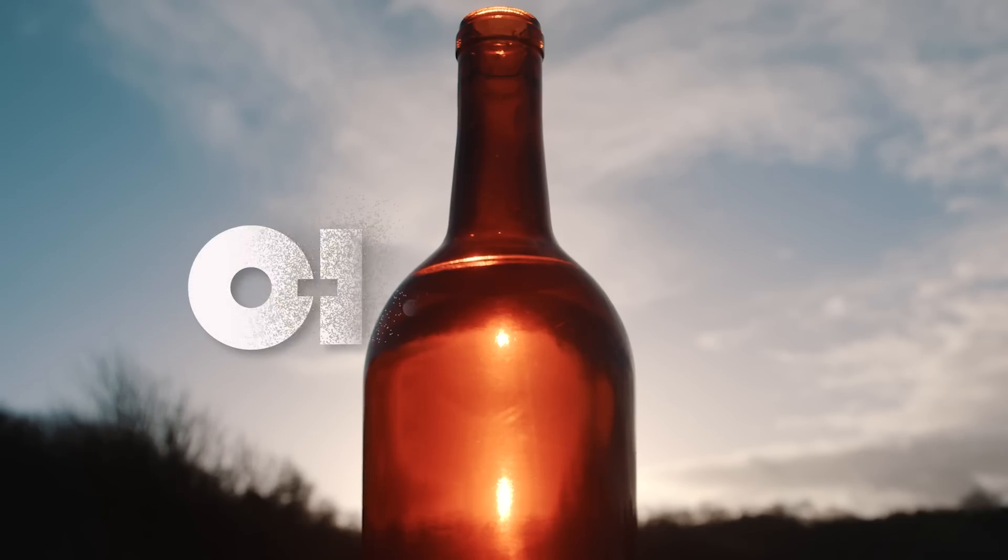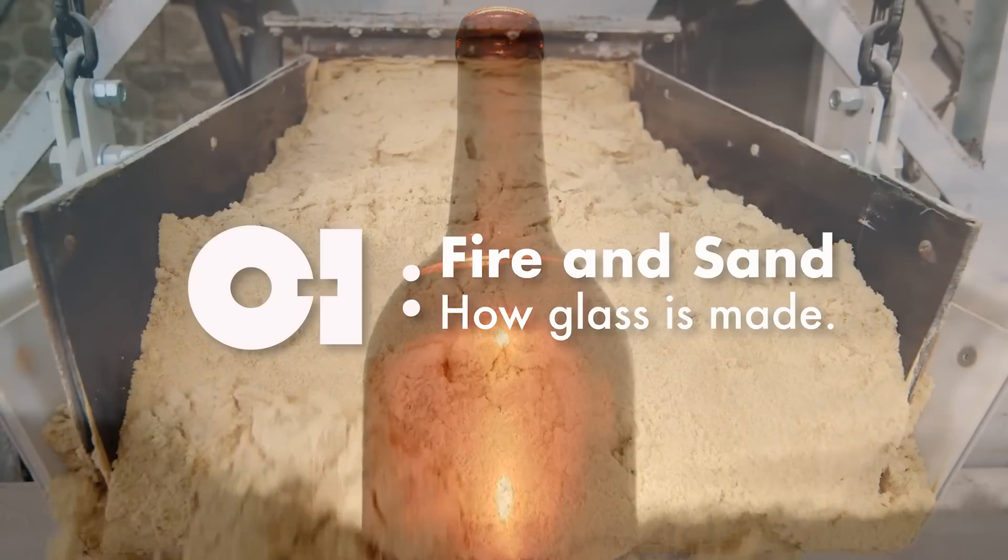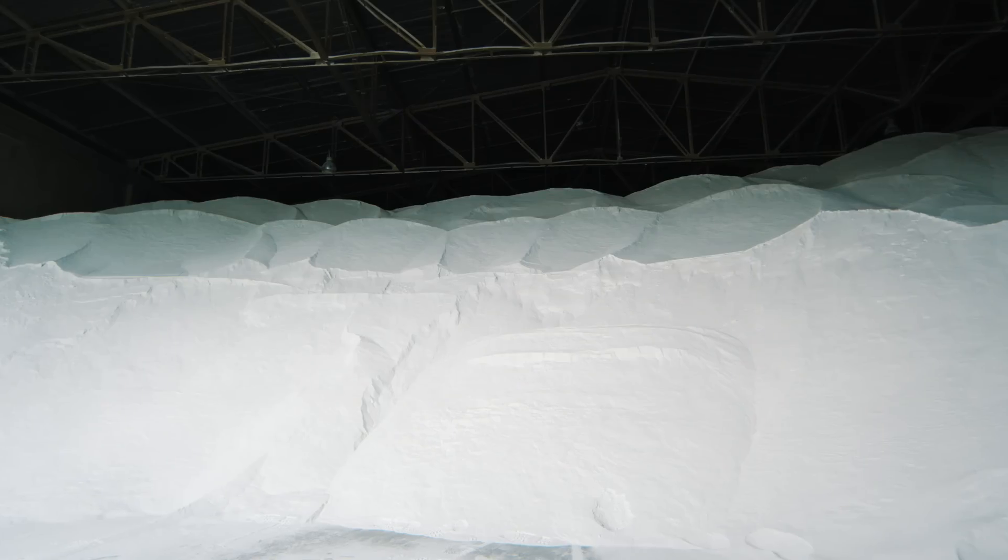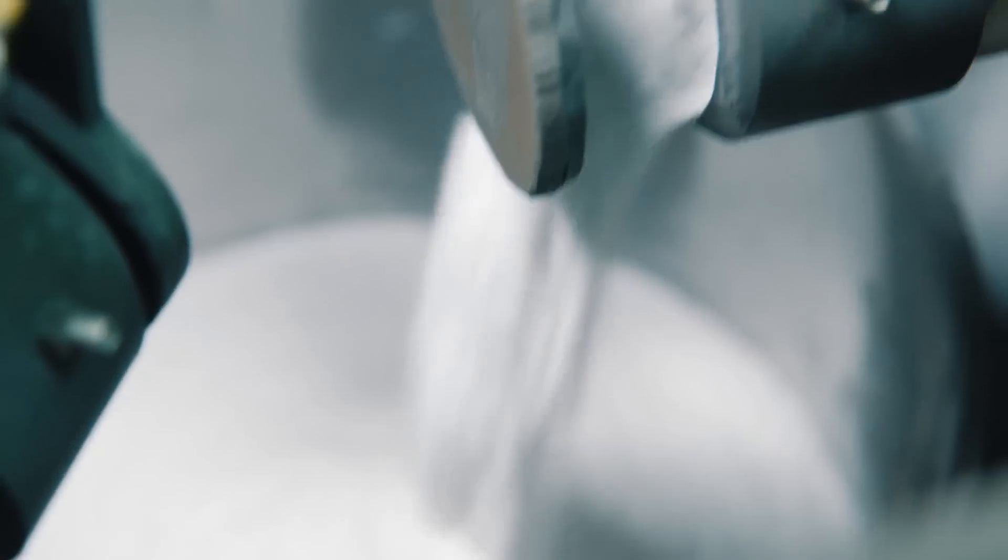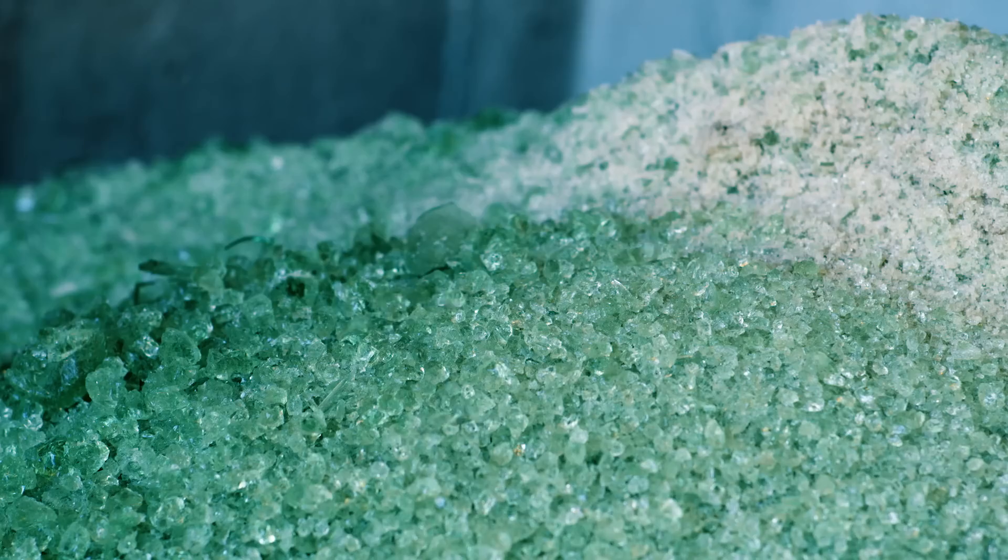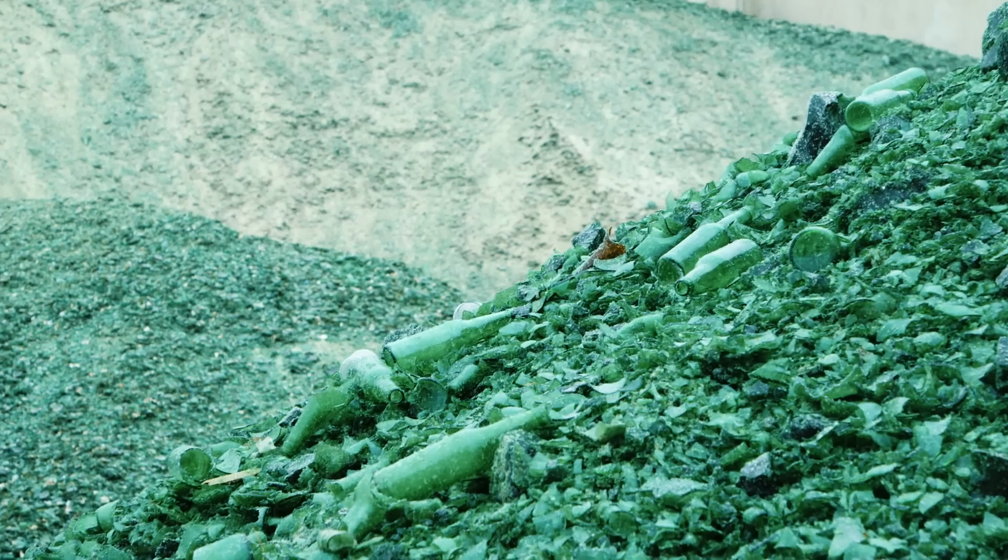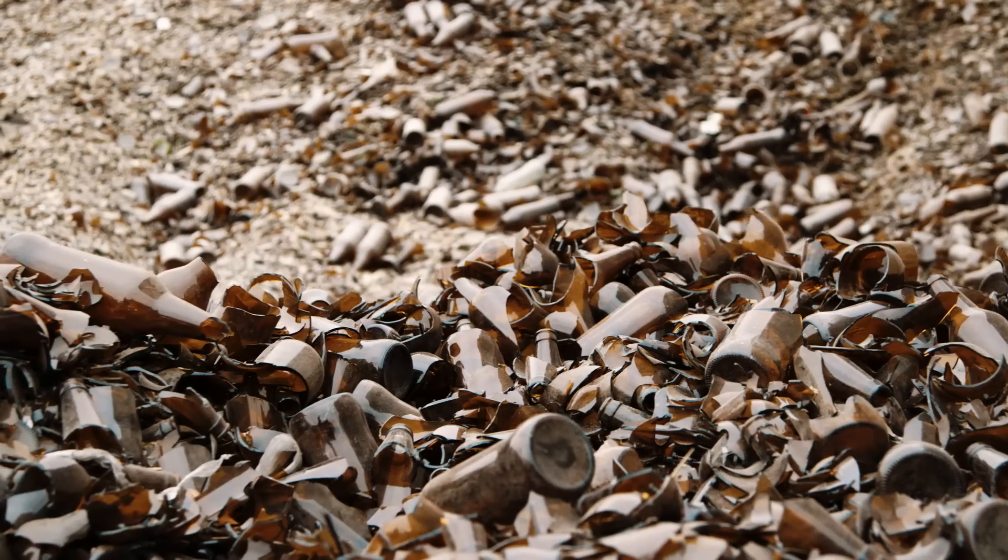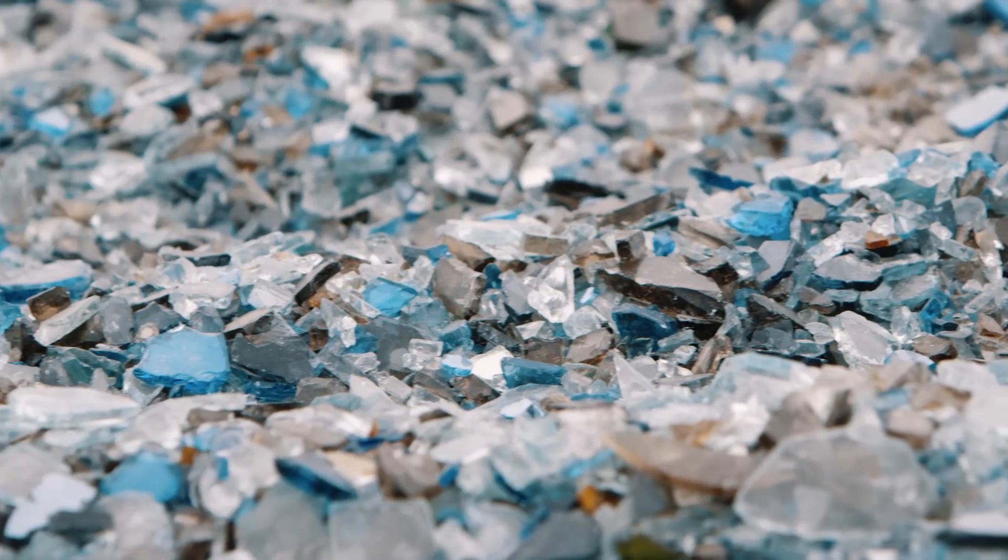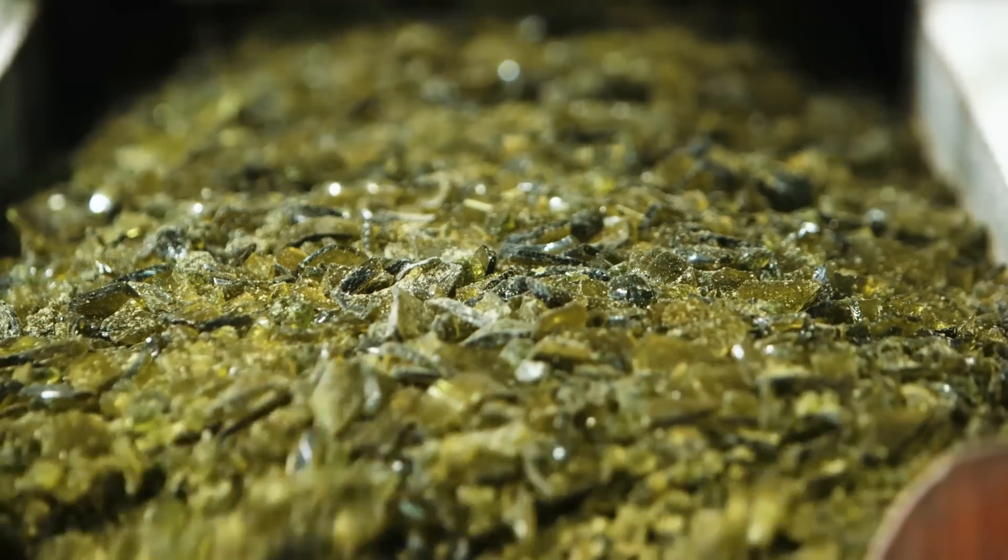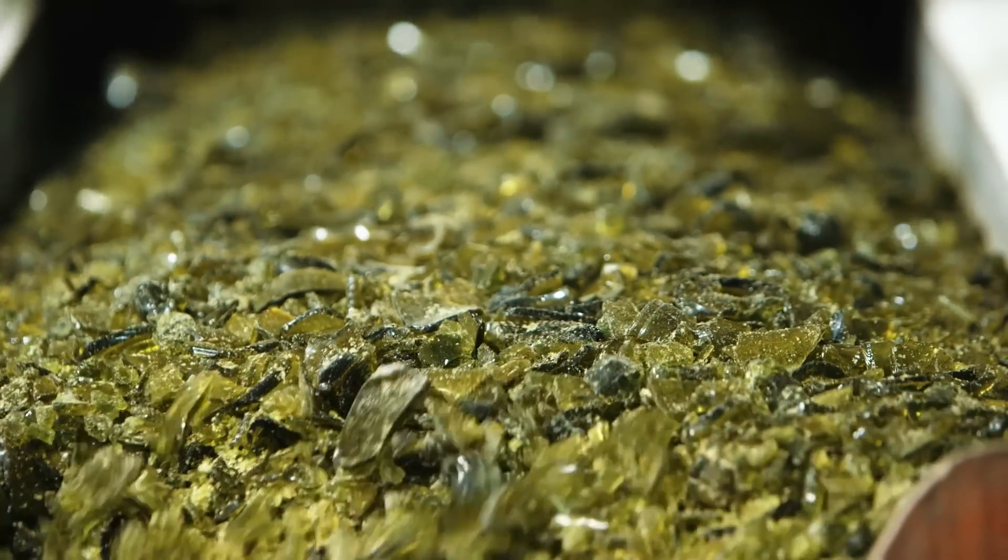We begin here: silica sand, soda ash, and limestone. Recycled glass from consumers, or cullet, is added on average, making up nearly 40% of the mix. In some places, 70%. And we bring it here. This is the furnace.